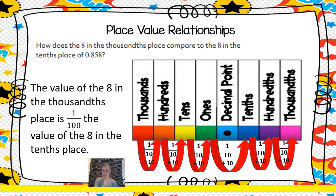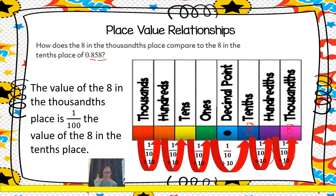So let's look at the eights in this number. How does the eight in the thousandths place compare to the value of the eight in the tenths place? The thousandths place is smaller than the tenths, so it makes sense that my answer will be in fraction form. That is two places away, and each place I jump when going in the smaller direction is like dividing by 10 — or one tenth the value. So one tenth times another one tenth would be one one-hundredth the value. The value of the eight in the thousandths place is one one-hundredth the value of the eight in the tenths place.